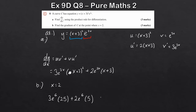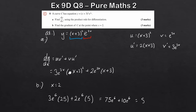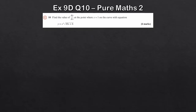Simplifying: 75e to the 6 plus 10e to the 6. Collecting like terms gives 85e to the 6. You can write this as a numerical answer if you want, but 85e to the 6 is the exact solution. That gives 3 marks for part b, and 3 marks for part a — a nice easy start.